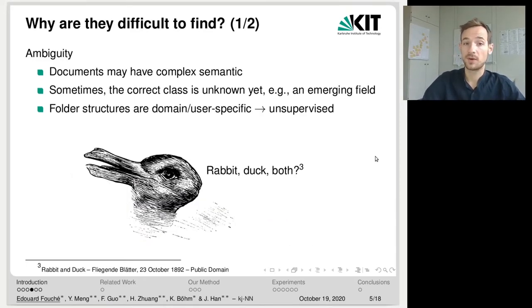And so why are those outliers difficult to find? Well, because they are ambiguous. Documents may have complex semantics which even span across multiple fields. Sometimes the correct class is not even known yet. For example, a given document belongs to an emerging field. Also, for each problem, the folder structures are highly domain or user-specific. So we don't have labels about which documents are outliers and which documents are inliers. So this problem should be treated as an unsupervised problem.